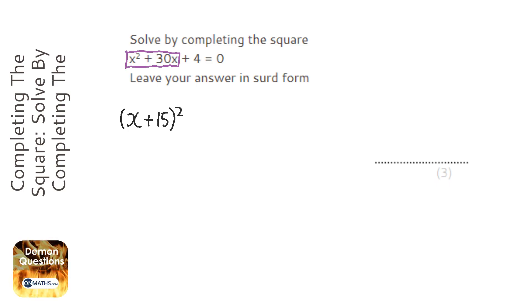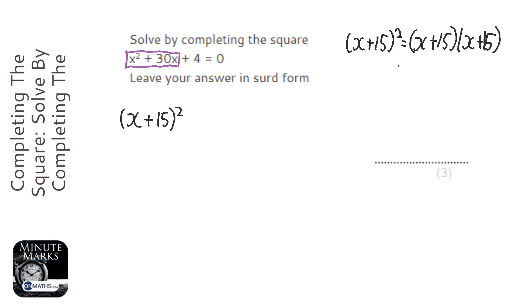Now if we do x plus 15 squared, which is (x+15)(x+15), you get x² and then plus 15x plus 15x, so it's plus 30x, which is great because that's what it says in the question. But then you have a plus 225, so we've got to deal with that 225.